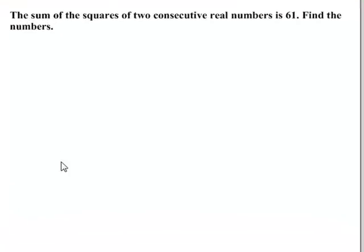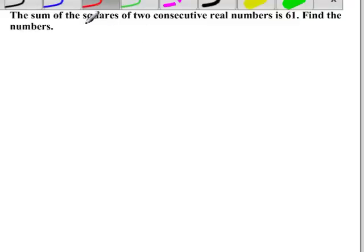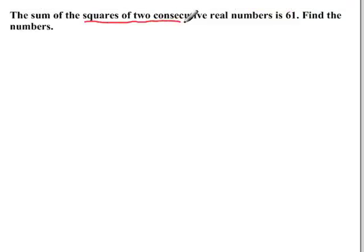Alright, let's go ahead and solve the following problem by first building an equation, making sure it's a quadratic equation, and then using the quadratic formula to solve. I'm looking for the sum of the squares of two consecutive real numbers, and I know that that value is equal to 61.